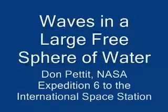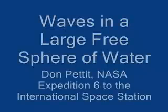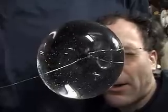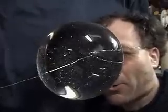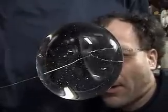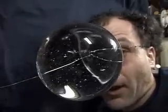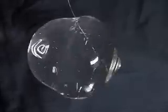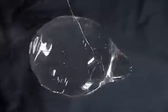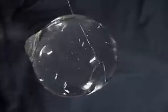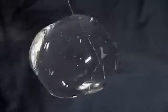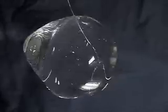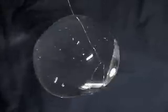Waves in a large free sphere of water. Here we have a large free sphere of water about the size of my head, 130 millimeters in diameter, and we put a puff of air — 10 cc's in 100 milliseconds — radially directed in from the side and look at the resulting waves.